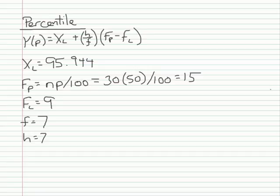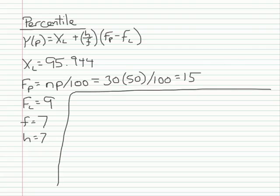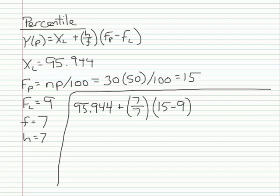Now you have all the information you need to make this computation. I'm just going to plug in the values. x sub l is 95.944 plus the interval width divided by the frequency, multiplied by f sub p minus f sub l, which is 15 minus 9. With that you get 95.944 plus 6, and the answer is 101.944.